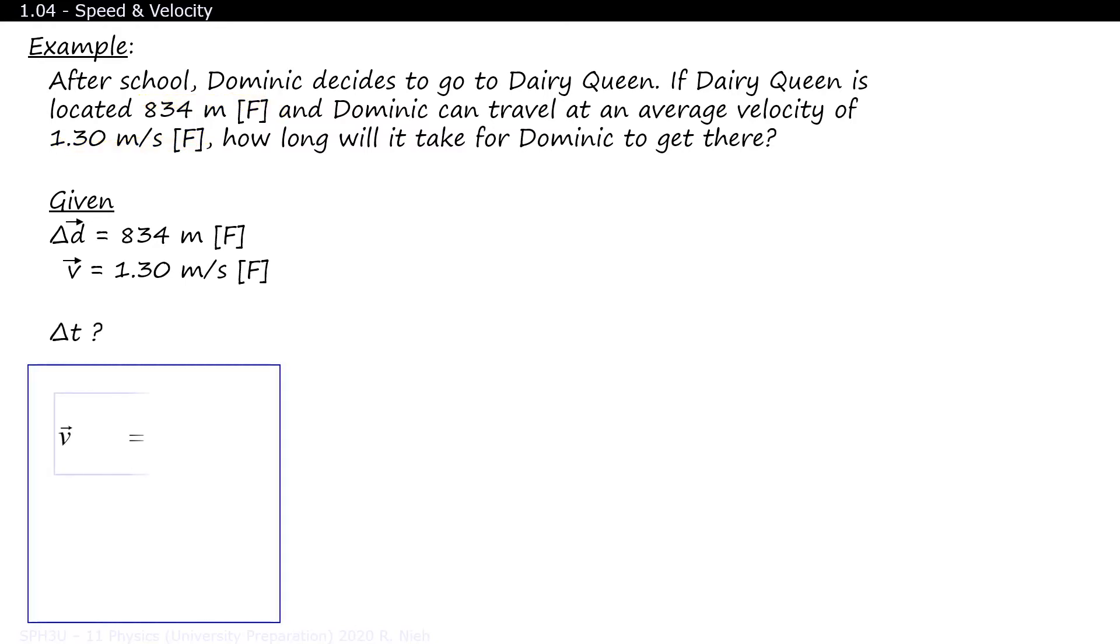If we take our formula from earlier, and then multiply both sides by delta t, we get this formula. And then if we divide both sides by V, we end up with this formula. Now we can substitute in the values. 834 divided by 1.30 gives us 642. But 642 what?